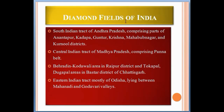The diamond fields of India include: the South Indian tract of Andhra Pradesh, comprising parts of Anantapur, Kadappa, Guntur, Krishna, Mahbubnagar, and Kurnool districts; the Central India tract of Madhya Pradesh, comprising the Panna belt, Behera Deen Kola, Kodavali area in Raipur district, and Tokpal-Dugapal areas in Bastar district of Chhattisgarh; and the Eastern Indian tract, mostly Odisha, lying between the Mahanadi and Godavari rivers.